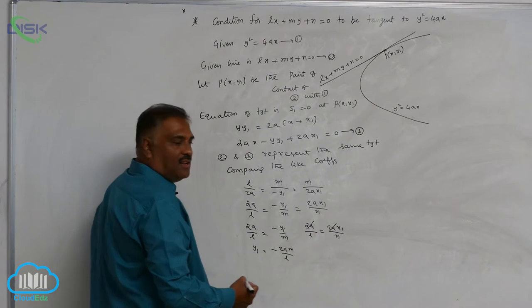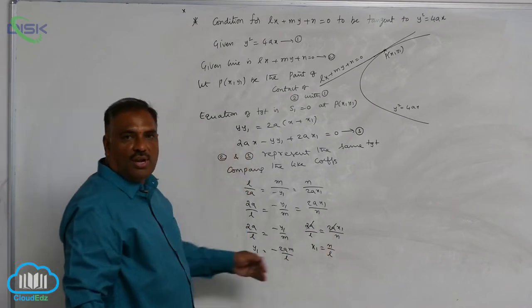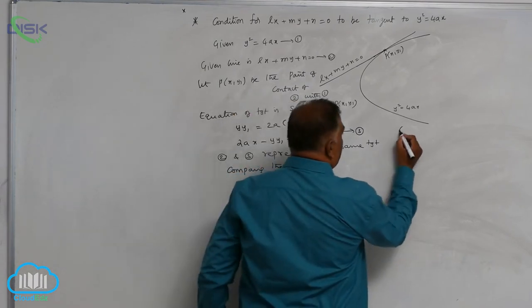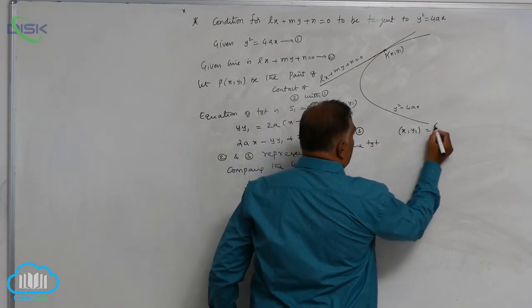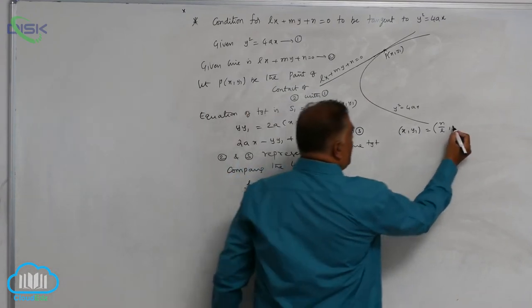2A gets cancelled. So, x1 is equal to N by L. Let us write: x1 comma y1 is equal to N by L comma minus 2AM by L.